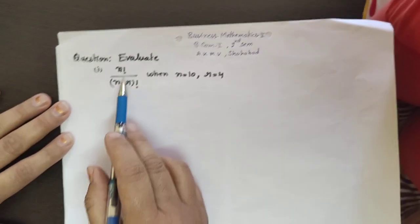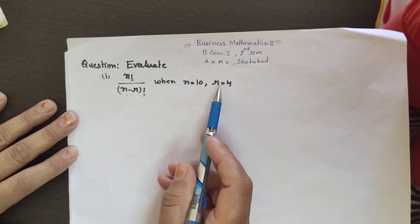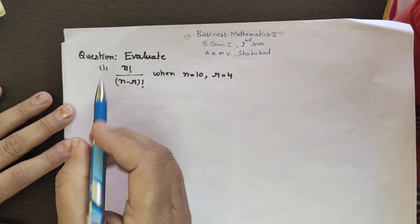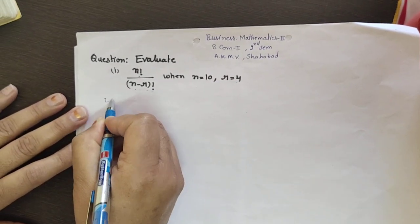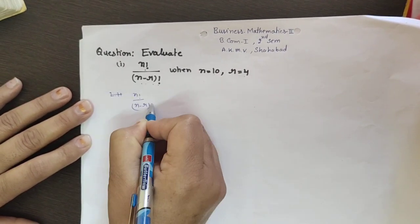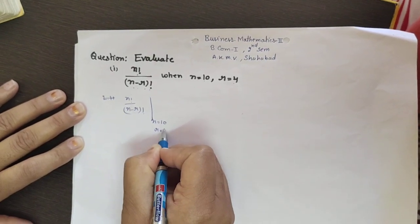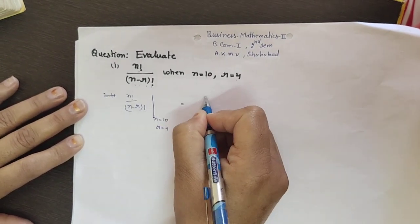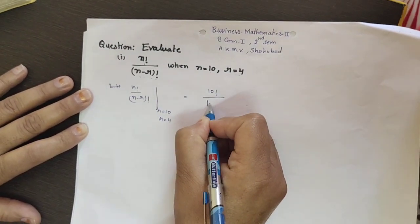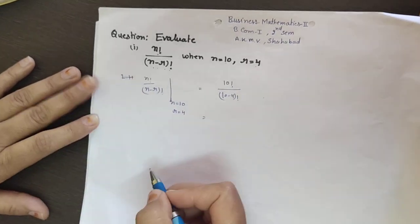The type of question asked in this case will be: evaluate n factorial over (n minus r) factorial when n = 10 and r = 4. Substituting these values, the expression becomes 10 factorial over (10 − 4) factorial.